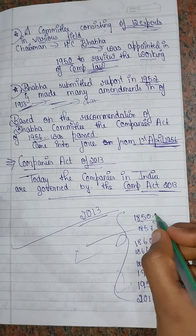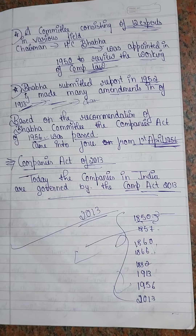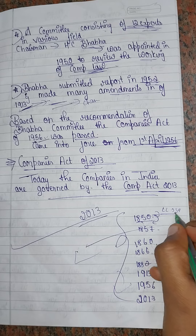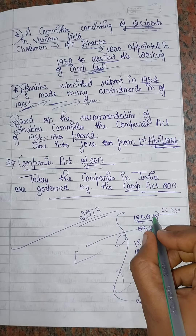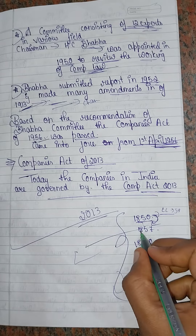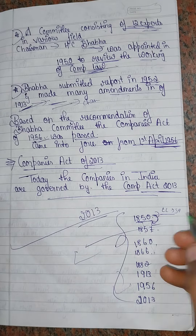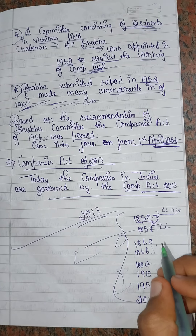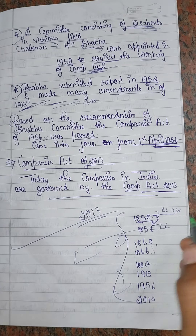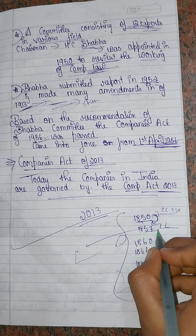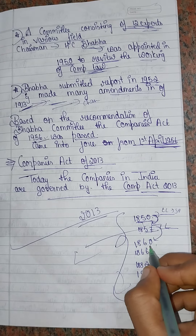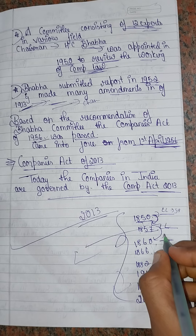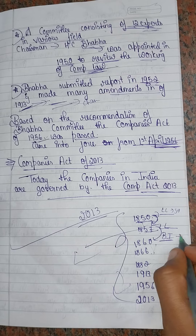To recap: in 1850, the Joint Stock Companies Act was passed. It was replaced in 1857. The 1857 Act provided limited liability to shareholders. In 1860, it was extended to banking and insurance sector shareholders as well.